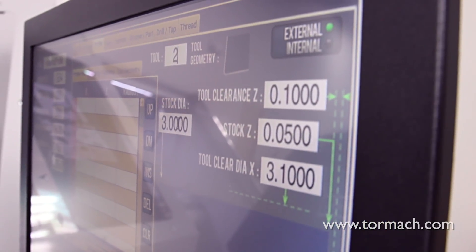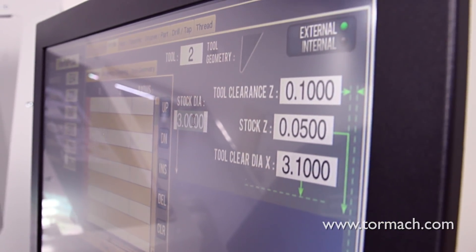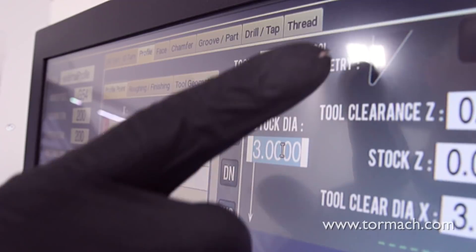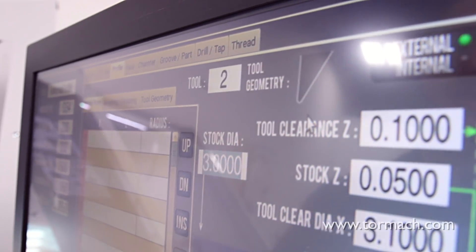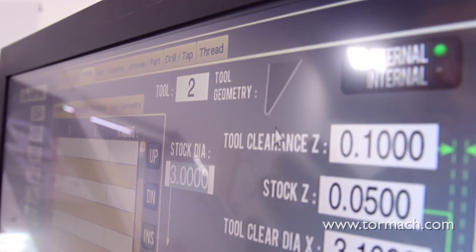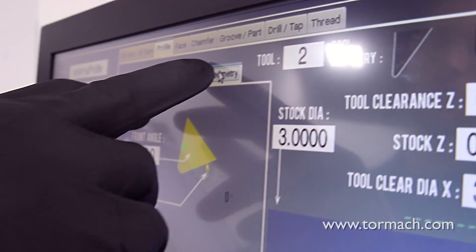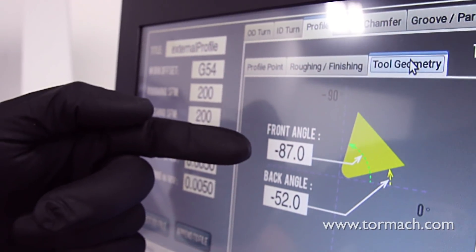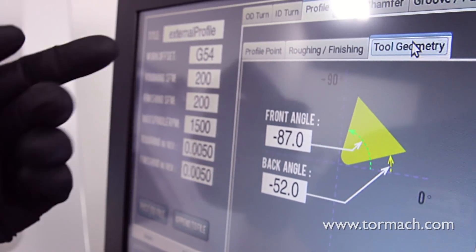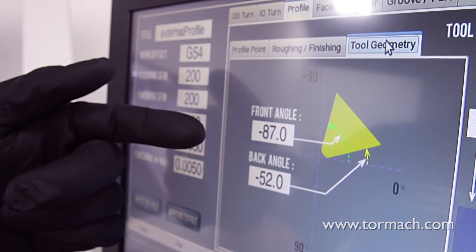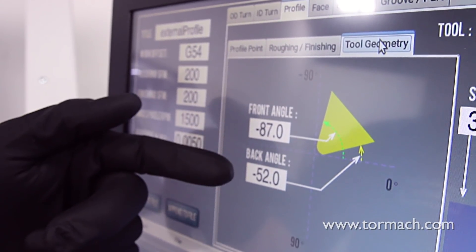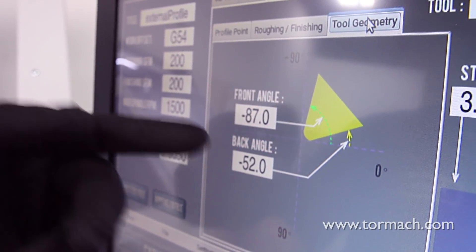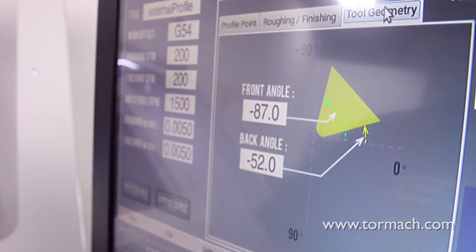Our tool number we're going to use for this project is tool 2. It's a 35 degree diamond mounted in a right-hand holder. So you can see the tool geometry right here represents a 35 degree diamond. If we want to edit or change that we can come under our tool geometry tab and you can see that we have a minus 87 degree which gives us 3 degrees of clearance. This is what our holder has built into it and then we're 87 minus the 35 gives us 52 degree back angle. So that defines our insert geometry with 3 degrees of clearance and a 35 degree insert.